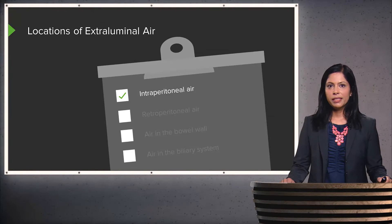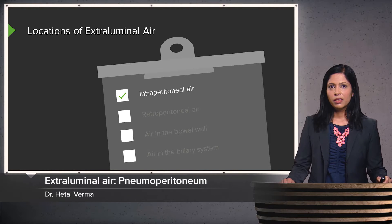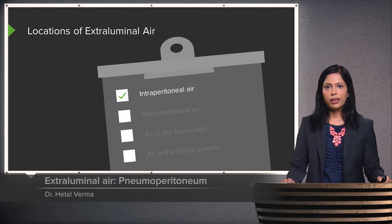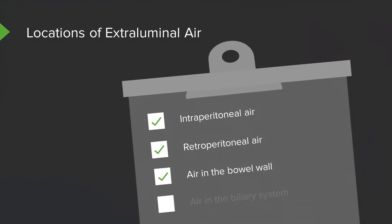In this lecture, we will be discussing extraluminal air, also known as free air. The different locations of extraluminal air include intraperitoneal, retroperitoneal, air within the bowel wall, or air within the biliary system.